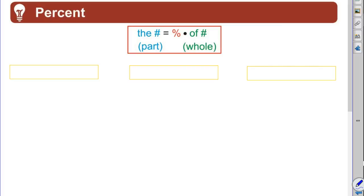When that's not the case, the number is the part and the of number is the whole. So the part equals the percent times the whole. If you know those two things, you should be able to handle any problem. So let's get right into it.